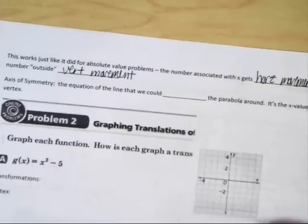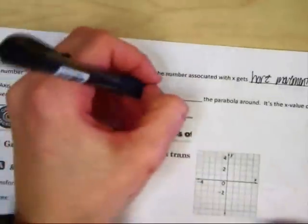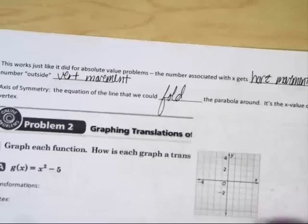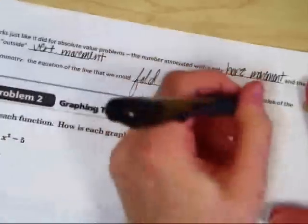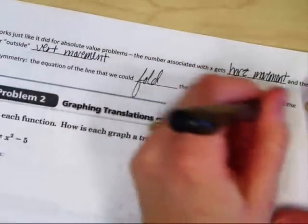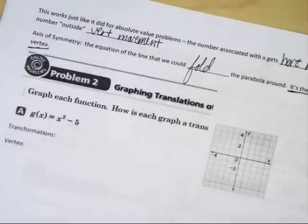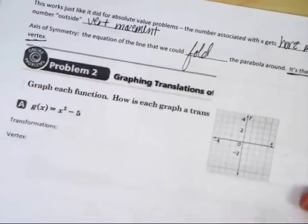The axis of symmetry is the equation of the line that we could fold the parabola around. That's not new. It's the x value of your vertex. Let's take a look at problem 2. Let's take a look at problem 3.